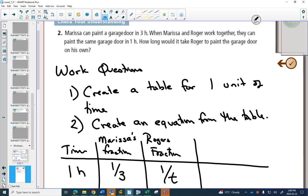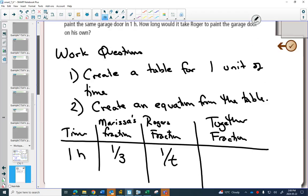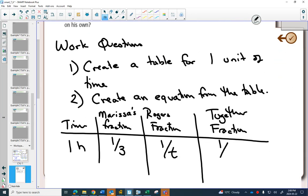And then we make our together fraction. And we're told that they get it done together in one hour. So this would be one over one.